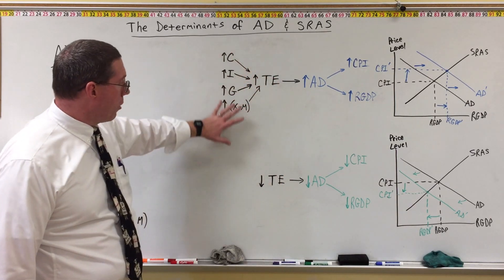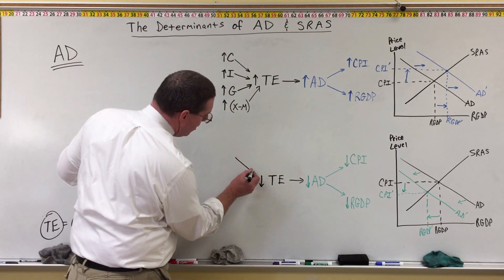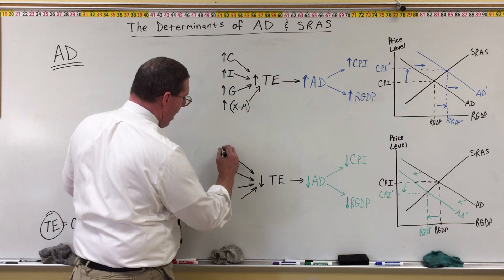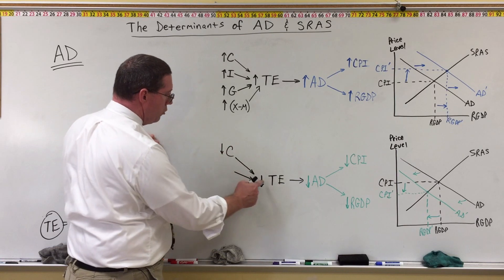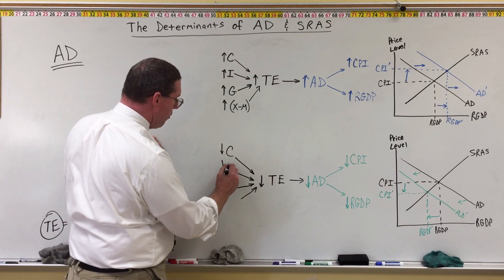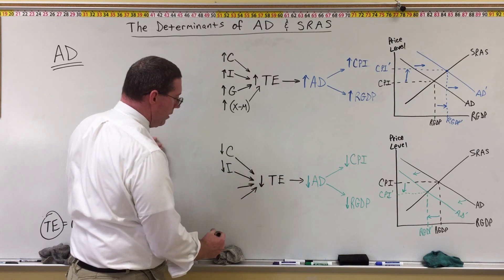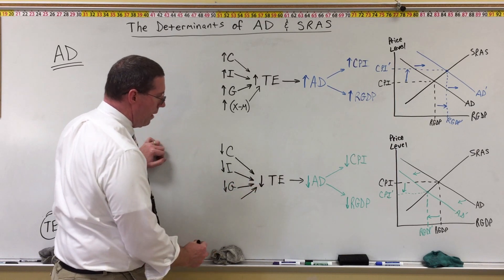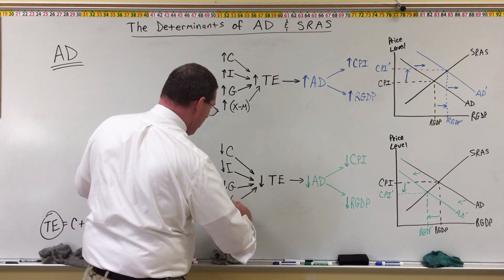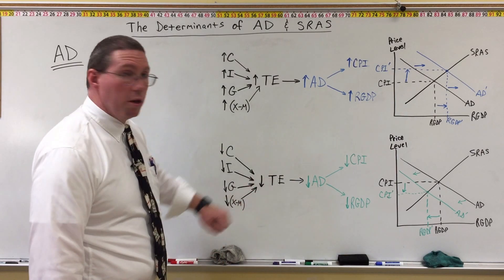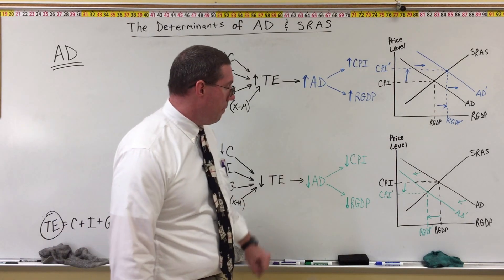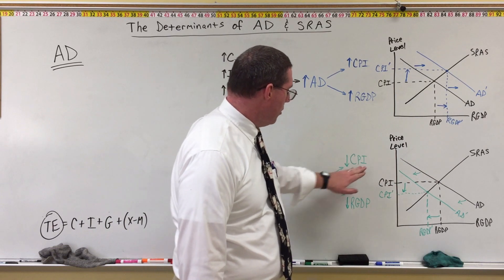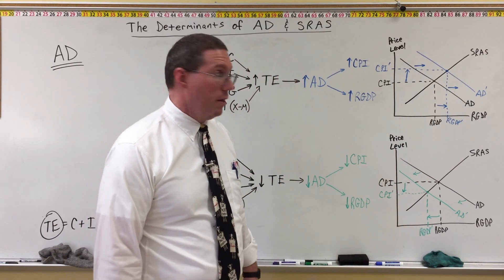However, if any of these four categories decreases — a decrease in consumption, a decrease in investment, a decrease in government spending, or a decrease in net exports — then total expenditure will go down, and aggregate demand will go down. The aggregate demand curve will shift to the left, we'll have a decrease in the price level, and we'll have a decrease in real GDP.